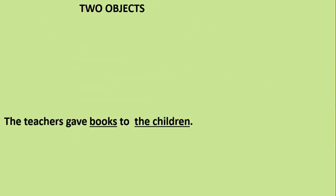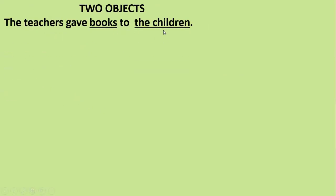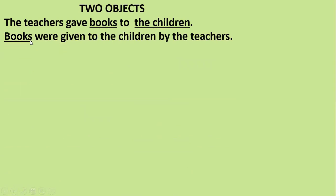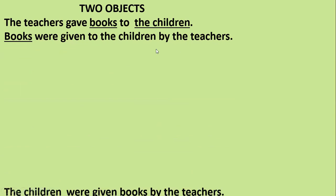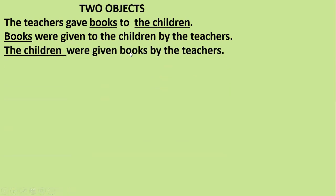If you get two objects in a sentence — 'The teachers gave books to the children' — you have a direct object and an indirect object, so you will get two answers. 'Books' is plural so: 'Books were given to the children by the teachers.' The second answer: 'The children were given books by the teachers.' The subject is written in the object's place as an agent.